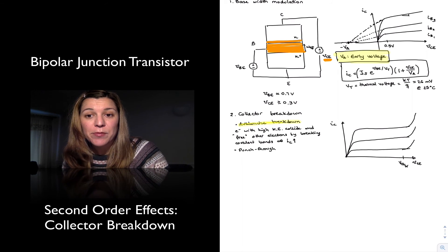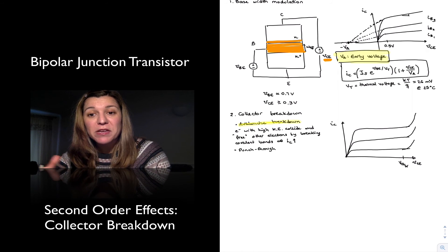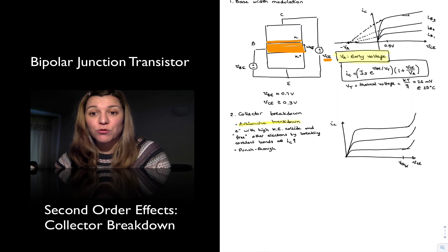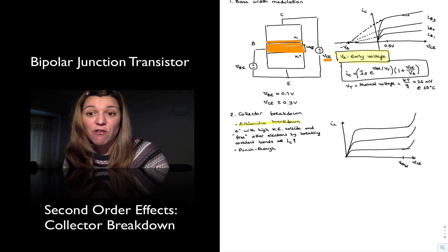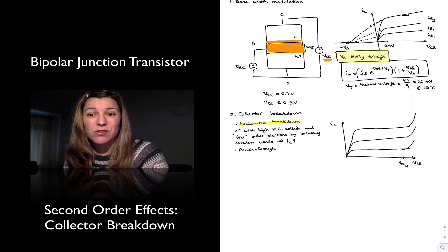And so when that happens, you are basically tying your base emitter junction to the VCE voltage, which is now very high, let's say in the order of 40 volts. Whereas the maximum breakdown voltage or the maximum voltage that you can apply to the base emitter junction without damage is about 6 volts,